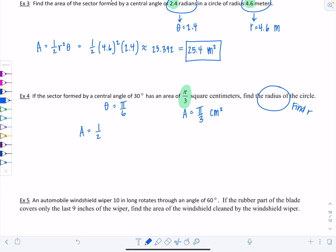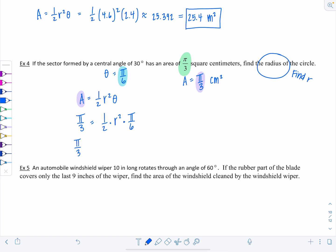Area equals one-half r squared theta. I'm going to replace A with π over 3. We have π over 3 equals one-half times r squared times theta. What's theta? π over 6. So here's π over 6. That means I have π over 3 equals... I'm going to multiply these two fractions by each other. One-half times π over 6 is π over 12 r squared. To get r by itself, I need to multiply both sides by 12 over π. Multiply by the reciprocal so it cancels out. Multiply by 12 over π.